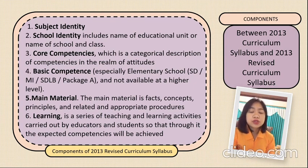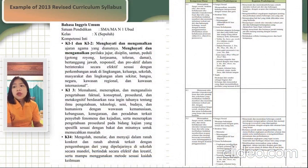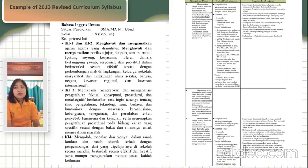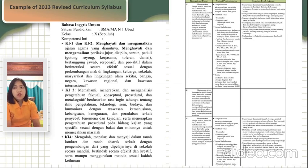That's all about the 2013 revised curriculum syllabus. Now, an example from the 2013 revised curriculum syllabus: it consists of six components — mata pembelajaran or subject identity, satuan pendidikan or school identity, kompetensi inti or core competencies, kompetensi dasar or basic competencies, mata pembelajaran or main material, and kegiatan pembelajaran or learning. The next material will be continued by my friend. Thank you.